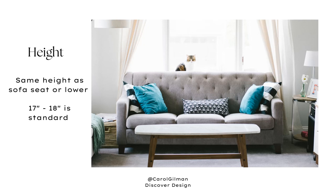The next dimension to consider is height. Coffee tables work best when they are lower than or at the same height as the seat cushions, so everything is easy to grab and reach. If you shop for coffee tables generally, they tend to be a standard height, around 17 to 18 inches, which matches the standard height of most sofas and chairs — so you don't always have to worry about this.